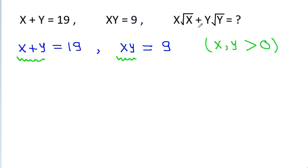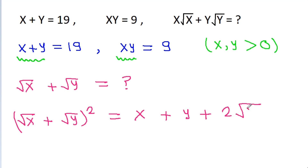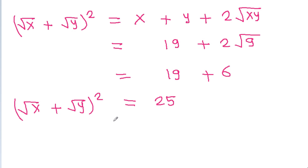We have to find the value of x root x plus y root y. So if we try to find root x plus root y, then (root x plus root y) whole square is equal to root x squared, which is x, plus root y squared, which is y, plus 2 into root x into root y. That gives x plus y plus 2 root(xy), which is 19 plus 2 root 9. Root 9 is 3, times 2 is 6. So we get (root x plus root y) whole square is equal to 25, or root x plus root y is equal to plus or minus 5.